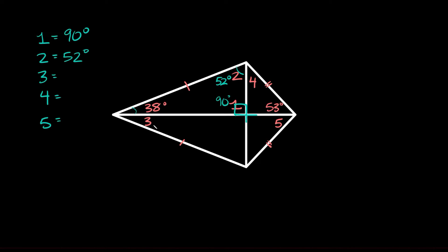Now for angle three: comparing the two big triangles, this side is congruent to this side, this side is congruent to this side, and they share the big middle side — congruent to itself. So since we have three congruent sides, the three angles are also congruent. If this angle is 38 degrees, then angle three is also 38 degrees.